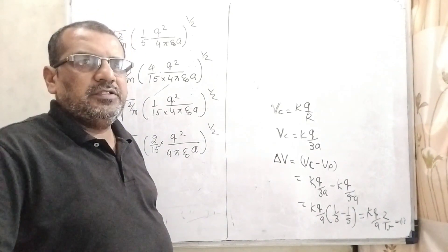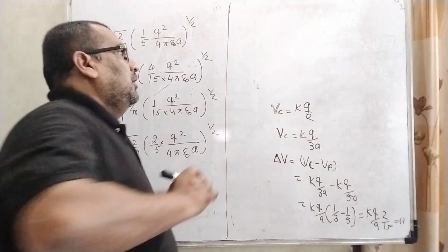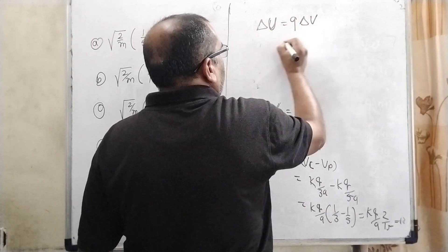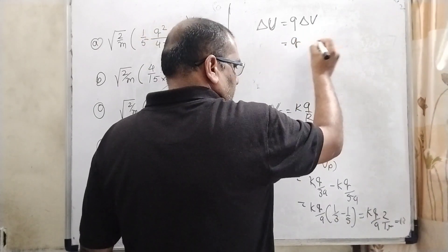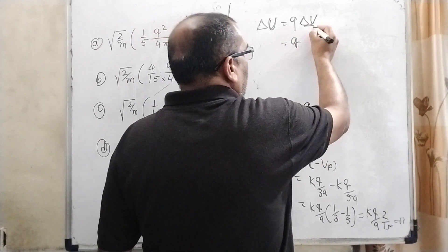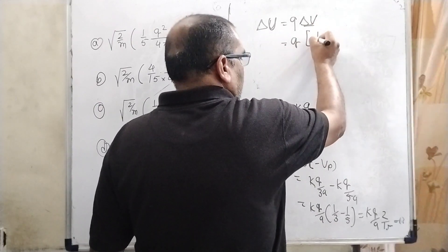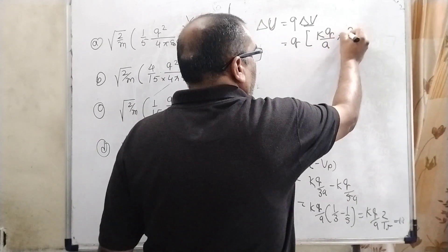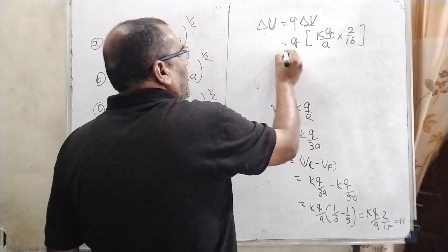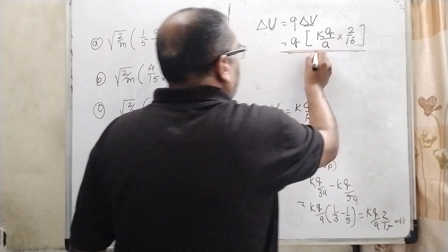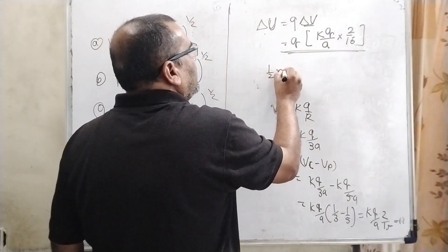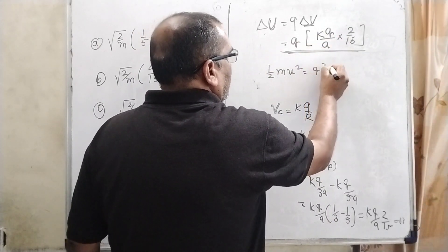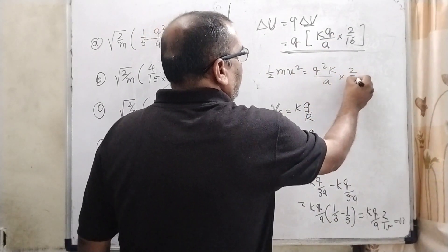Now, as we know that according to the law of conservation of energy, change in energy delta U equal to q into delta V. So q into kq by a into 2 by 15. So this energy, change in energy, is equal to kinetic energy.